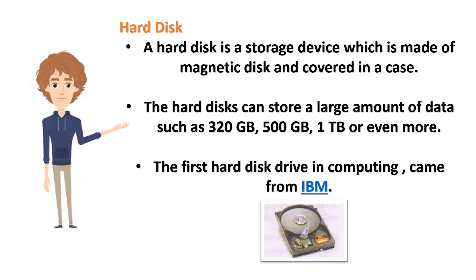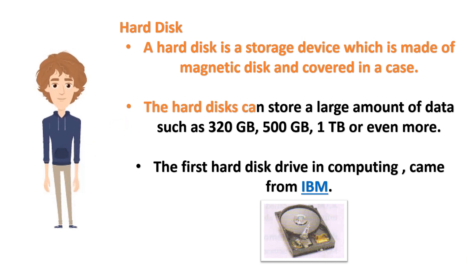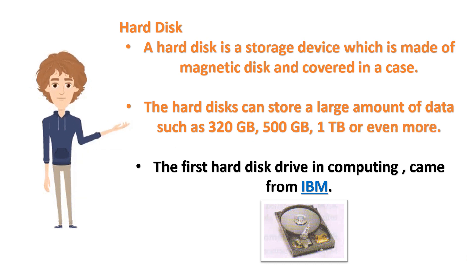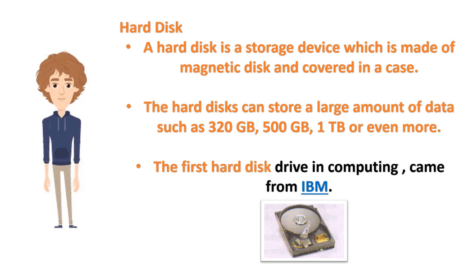Hard disk: A hard disk is a storage device which is made of magnetic disk and covered in a case. Hard disks can store a large amount of data such as 320GB, 500GB, 1TB or even more. The first hard disk drive in computing came from IBM.